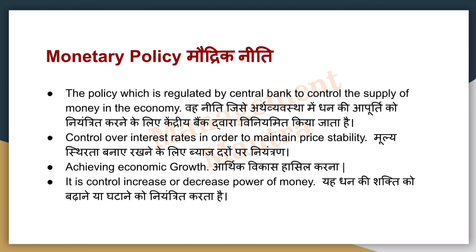When you control money and the power of money — for example, finding the right value of money — this is how policy works. There is a policy called Monetary Policy in which the money supply in the market is less, so people get less money or fewer loans. If the RBI reduces loans to banks, then the banks will give fewer loans to the public. This is how RBI or the central bank can control the money supply.